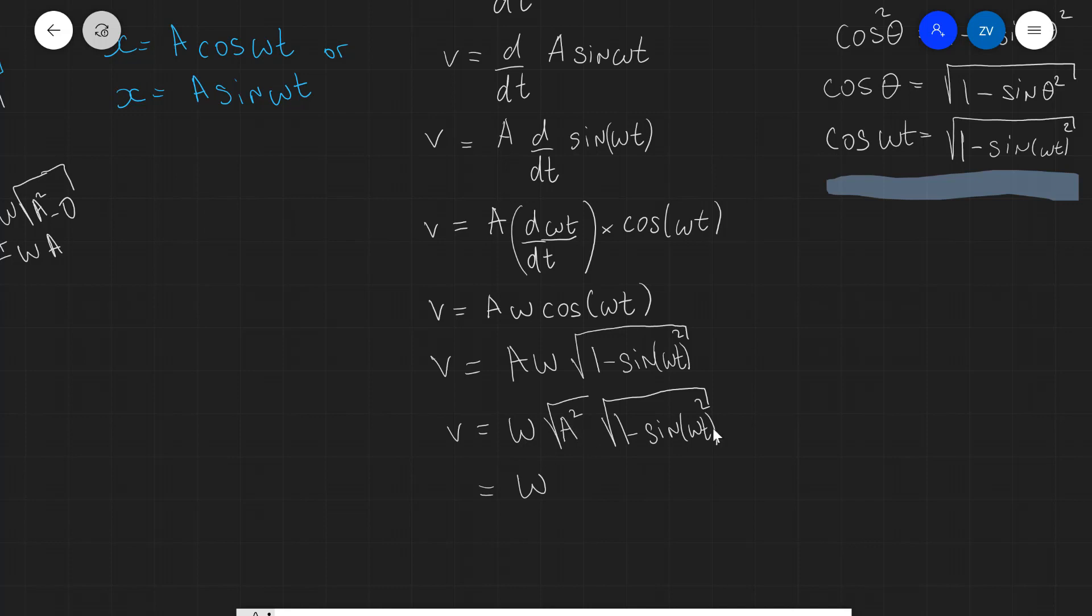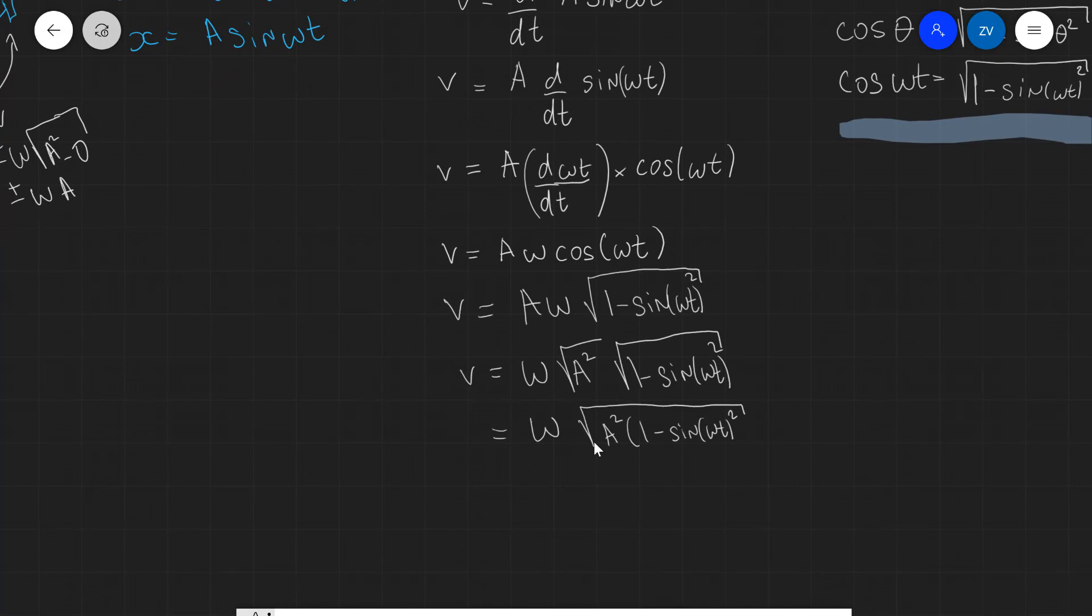Which is going to equal now, omega. Now, we can just multiply the two square roots, which will be equal to A squared times 1 minus sine omega t, all of it squared. I'm writing this in as many steps as possible, just so that I can be as clear as possible. And this will be equal to omega times the square root of A squared minus, then we're going to have A squared sine omega t squared.